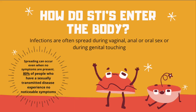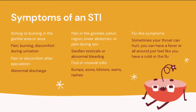80% of people who have a sexually transmitted infection experience no noticeable symptoms. That's a really big and scary statistic — 80% of people with STIs have no idea because they don't notice anything off or feel any different. That's how they easily spread from person to person, which is why we're seeing 20 million new infections every single year.